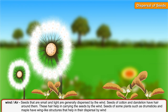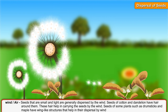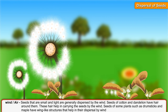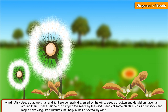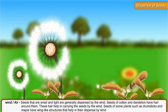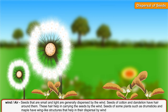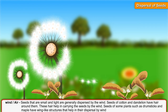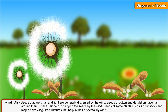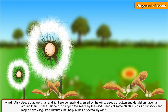Seeds that are small and light are generally dispersed by the wind. Seeds of cotton and dandelion have hair around them. These hair help in carrying the seeds by the wind.